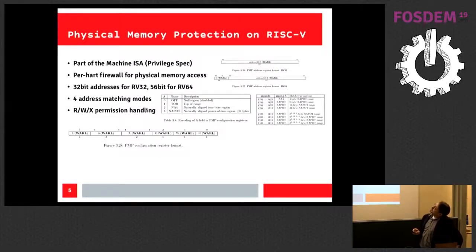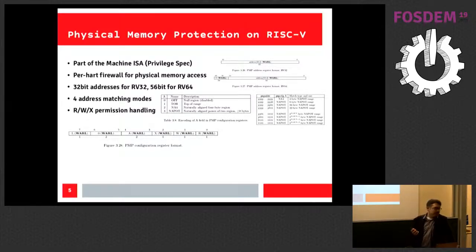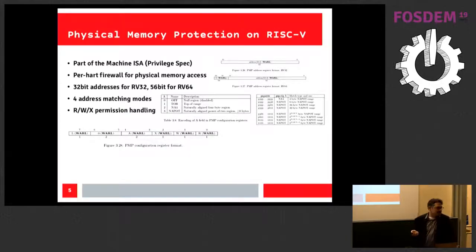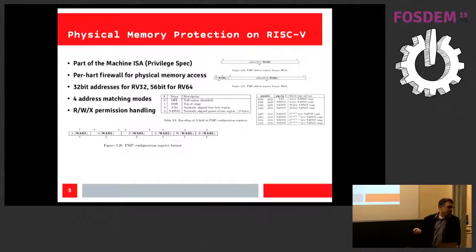Let's talk about physical memory protection as it currently exists. It's part of the machine ISA, so your core needs to implement the privilege spec. The privilege spec says you have up to 16 regions to protect, but vendors are free to implement more or less — the SiFive board has eight, which is enough. Other vendors might implement more regions. The privilege spec also allows vendors to implement another mechanism for physical memory protection.